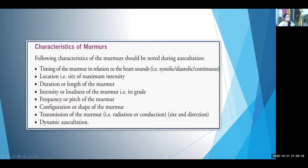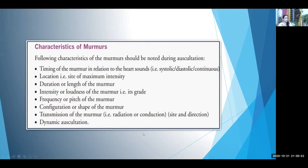Coming to murmurs: murmurs are produced by turbulent flow across the valves. To characterize a murmur you assess: the timing in relation to heart sounds — systolic, diastolic, or continuous; the location, meaning the site of maximum intensity; the duration or length; the loudness or grade; the frequency or pitch; the shape or envelope; the transmission; and dynamic auscultation findings.